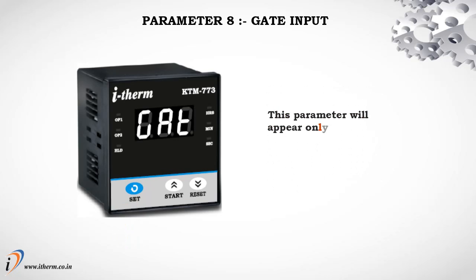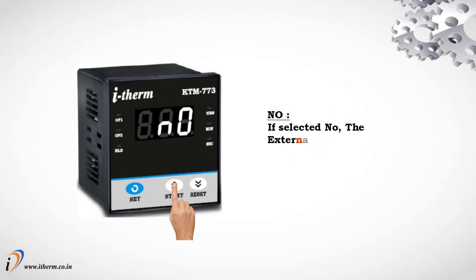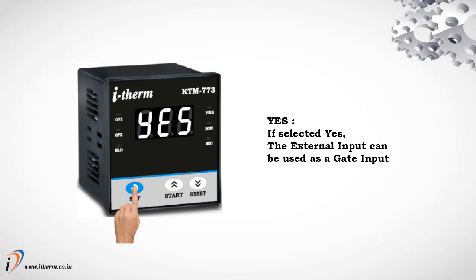Parameter 8: Gate Input. This parameter will appear only when the timer is configured for either power on start or front start. If selected no, the external input cannot be used as a gate input. If selected yes, the external input can be used as a gate input.